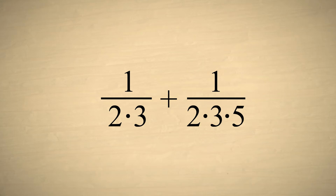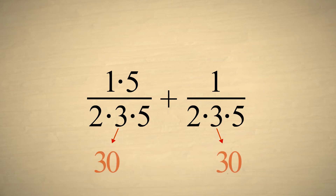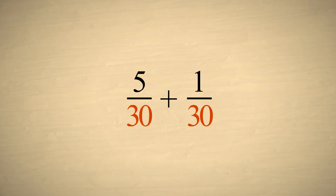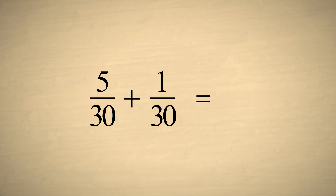The first denominator is missing one factor of five that the second denominator has. We can remedy this situation by multiplying the numerator and denominator of the first fraction by five. This doesn't change the value of the fraction since it's the same as multiplying the entire fraction by one. However, its denominator will gain the additional factor of five that it needs. The two fractions will then have a common denominator of thirty, which is the smallest denominator that will work for both fractions — the least common denominator. Now adding the two numerators, we get the sum of six-thirtieths.